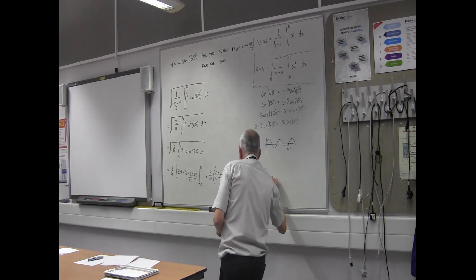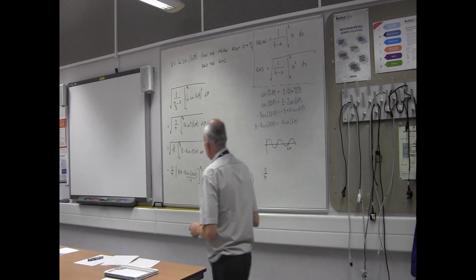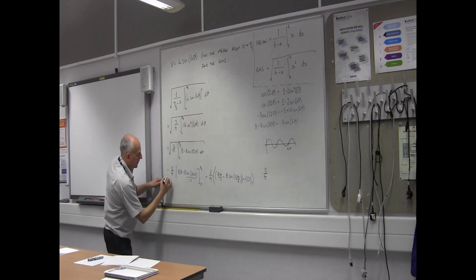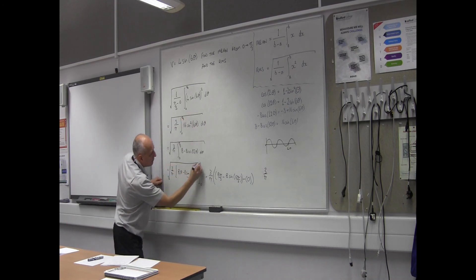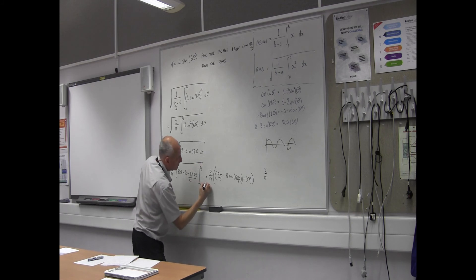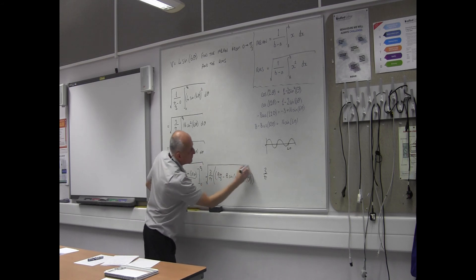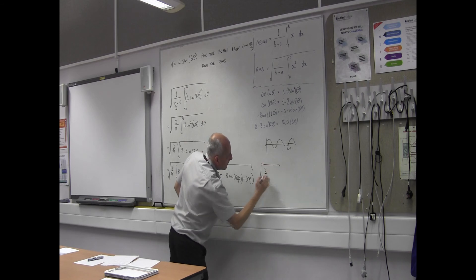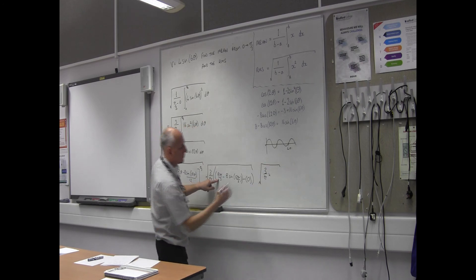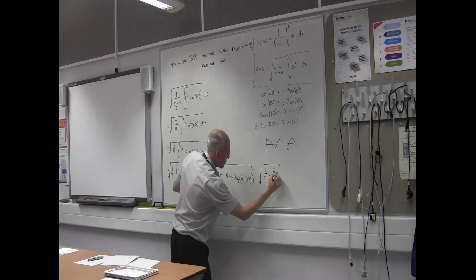So I'm just going to get left with this term. So I've now got 3 over π, quickly add a little correction on here, square root me answer. So I've now got that, that times this, 8π over 3.